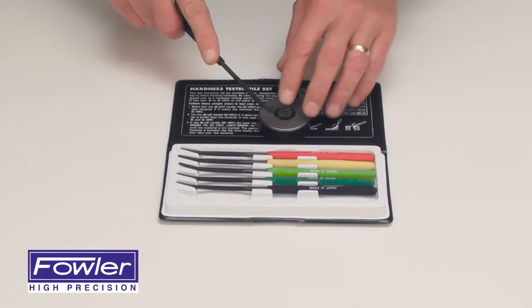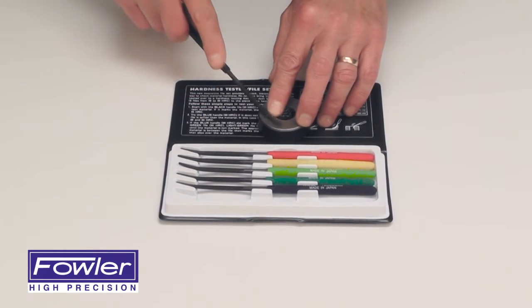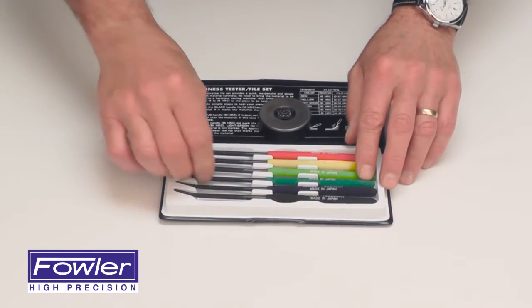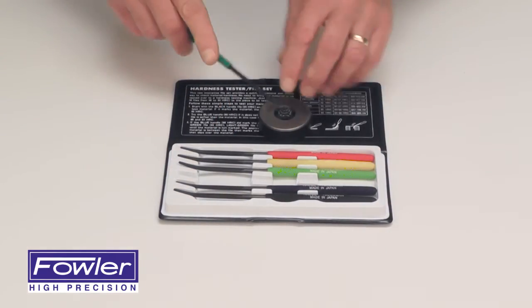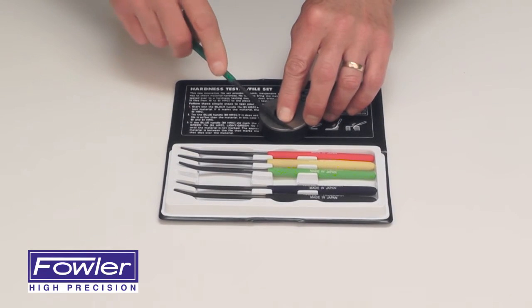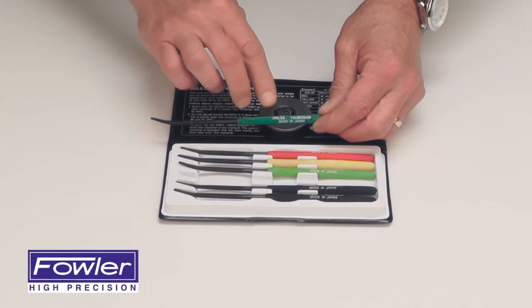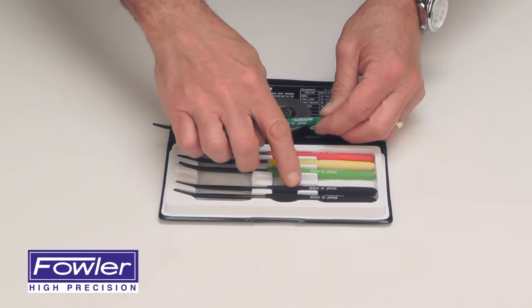Start with the hardness file. If it scratches the material, continue on until you get to the file where the material is not scratched. This way, you'll know the hardness of the material you're testing is between 55 and 60.